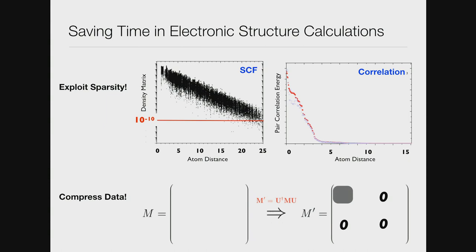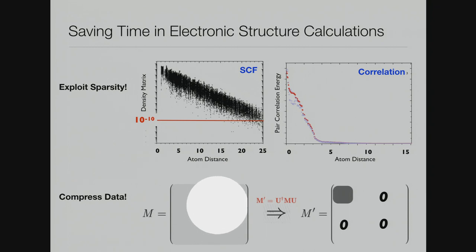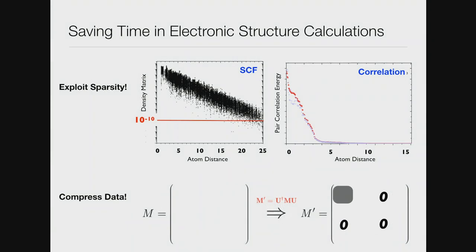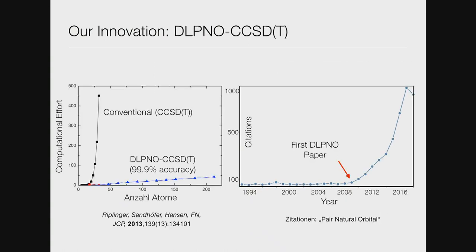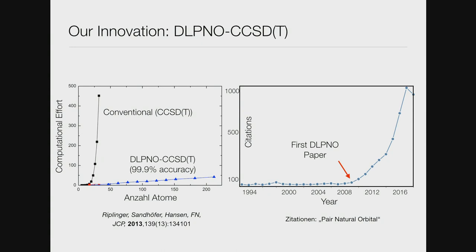The next thing you need to do is to compress data. The idea is rather than operating on large matrices densely filled with small numbers, you invent a transformation that gives you a small block of the matrix with large numbers that is densely filled and the rest is zero — then you truncate. It's basically a kind of Gzip operation on the quantum chemical information content. These are the three principles that we have utilized, and we have invented a method called DLPNO-CCSD(T), where DLPNO stands for Domain-Based Local Pair Natural Orbital theory. And what it gives you is linear scaling with respect to system size.